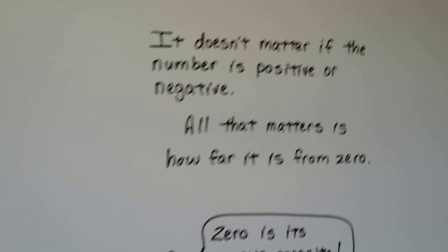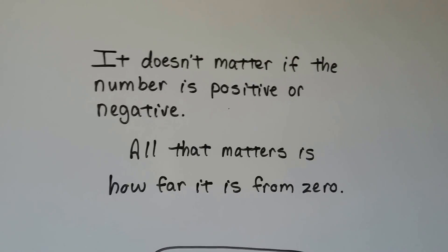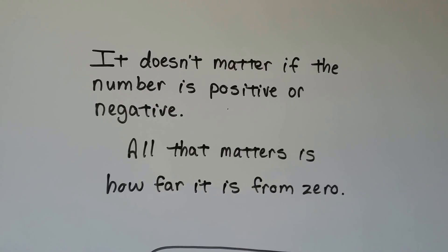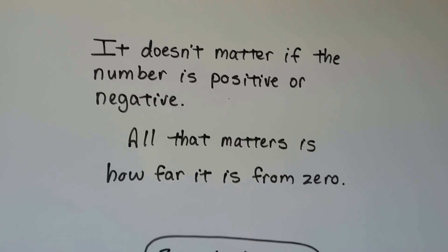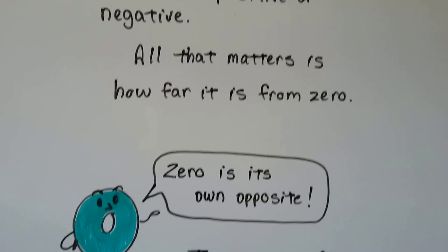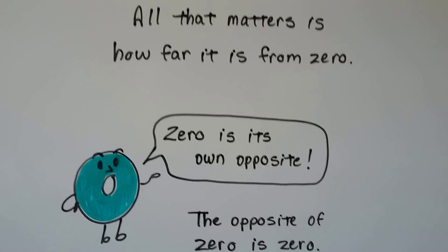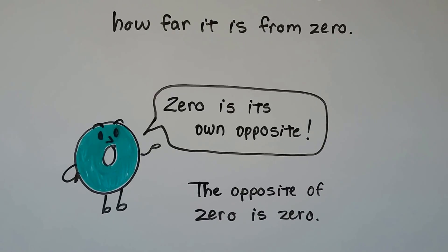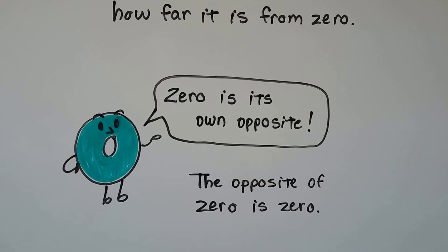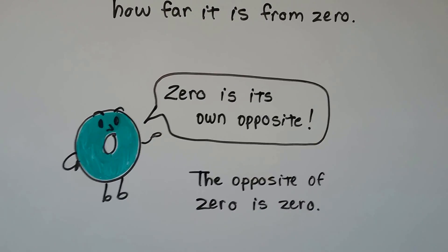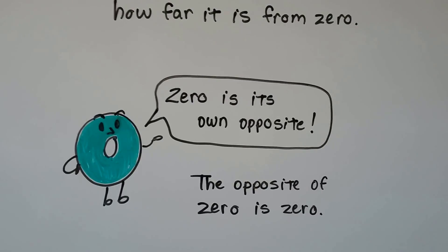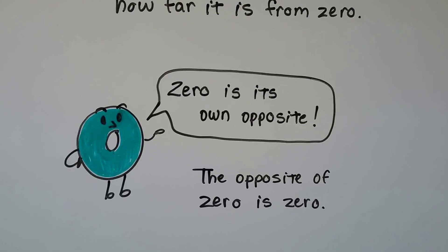It doesn't matter if the number is positive or negative — all that matters is how far it is from zero. And zero is its own opposite. The opposite of zero is zero. Isn't that silly? If anyone ever asks you what's the opposite of zero, tell them it's zero.